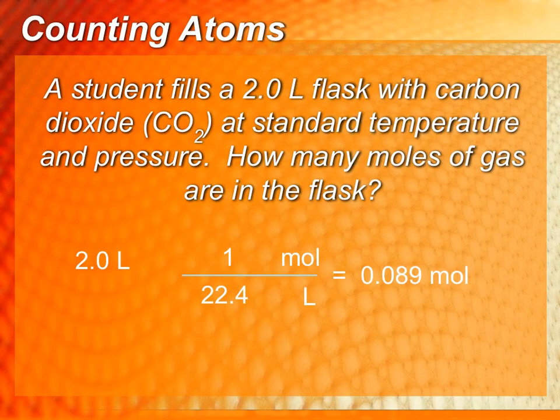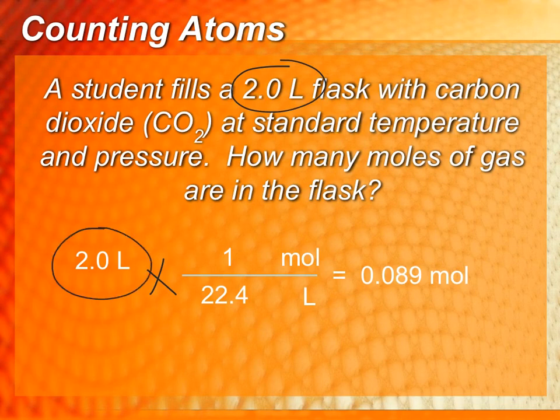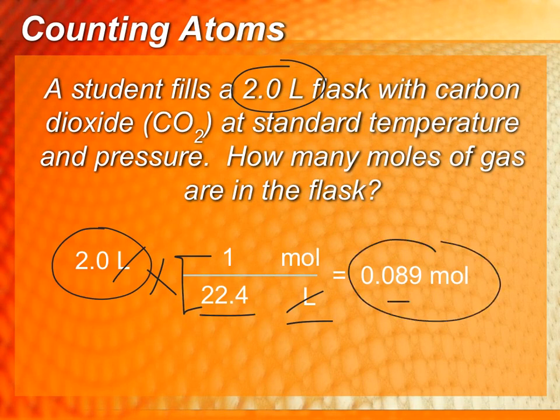Here is our last example using the liters now. Say you were given a 2-liter flask of carbon dioxide at standard temperature and pressure. How many moles of gas are going to be in this flask? Well, here's your liters. We know that one mole is equal to 22.4 liters. We're going to put the liters on the bottom so the units can cancel out. Just multiply and then divide, and we're going to come out with 0.089 moles of carbon dioxide in that flask.